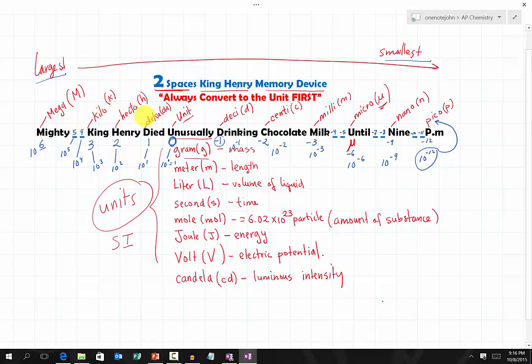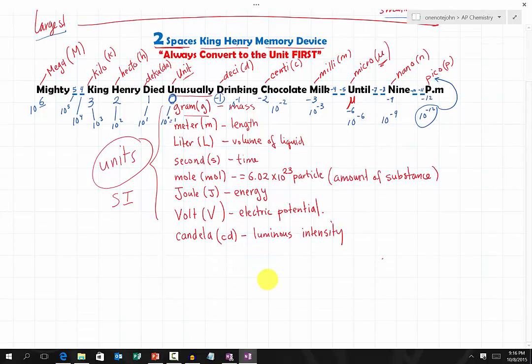Now, we're going to learn how to convert from one prefix to another prefix. In this case, let's look at an example. But before we look at an example, we need to notice the golden rules right here. The golden rule is always convert any prefix you have to the unit first.